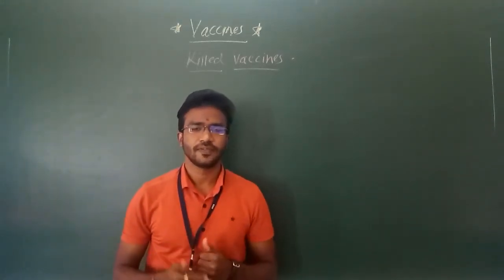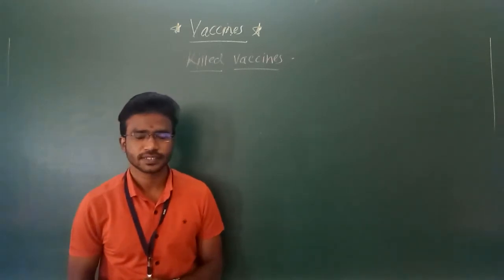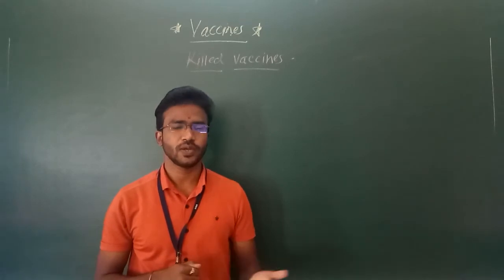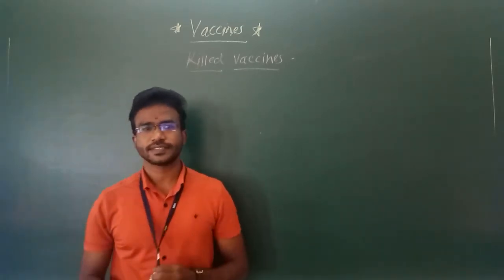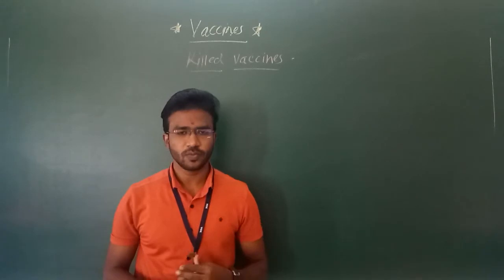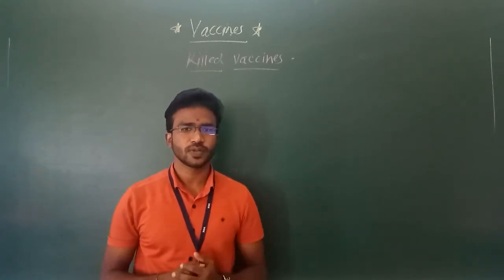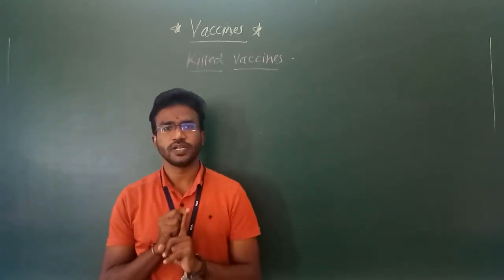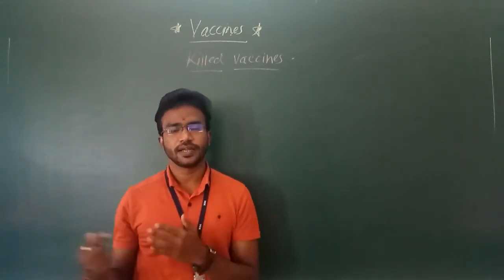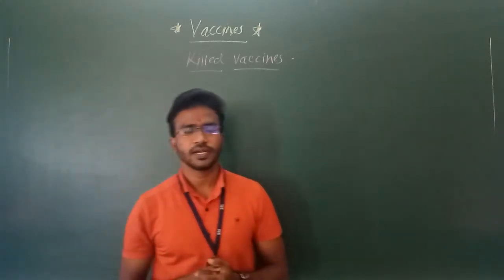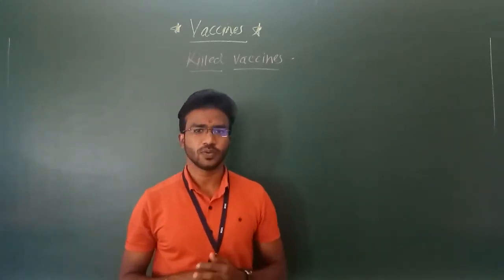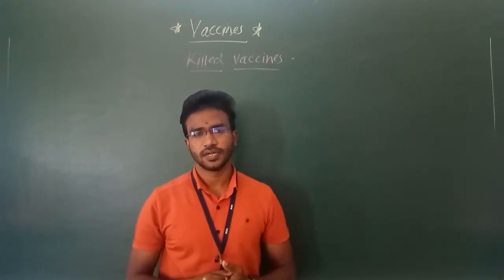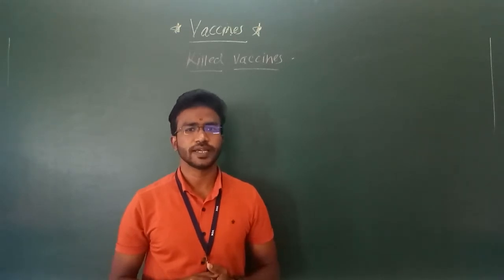Hello everyone. We are studying the types of vaccines. In the last lecture, I studied the first type, that is live attenuated vaccines. Live attenuated vaccines means the pathogen is kept alive but only its pathogenicity, that is virulence, is removed, while keeping the immunogenicity — that is, the ability to induce immune response — intact. Removing the disease-causing ability is called attenuation.